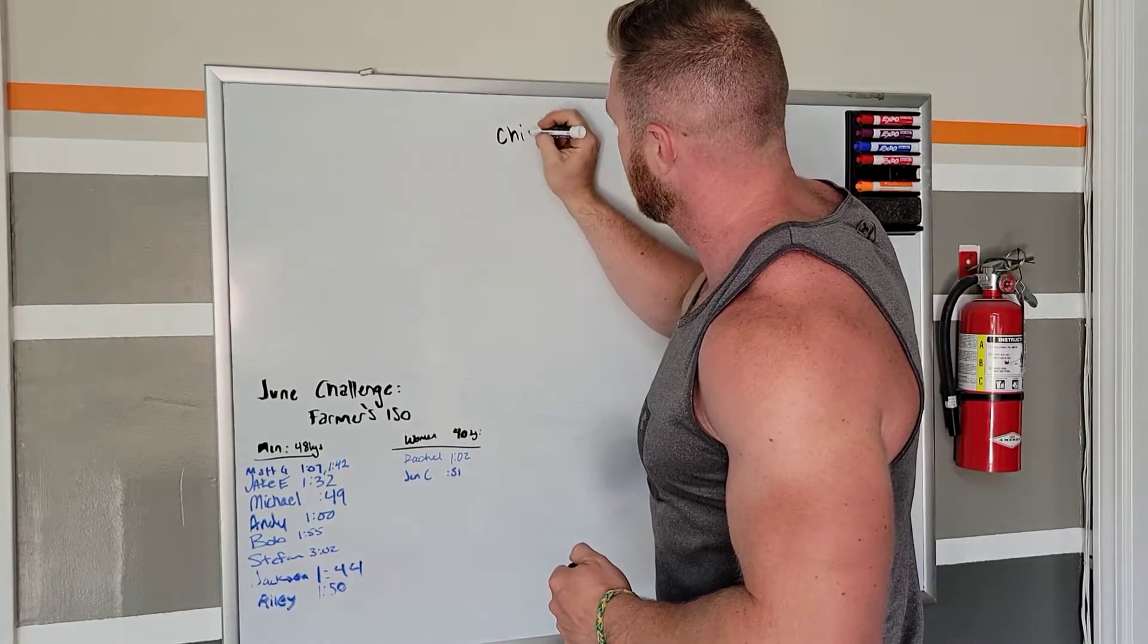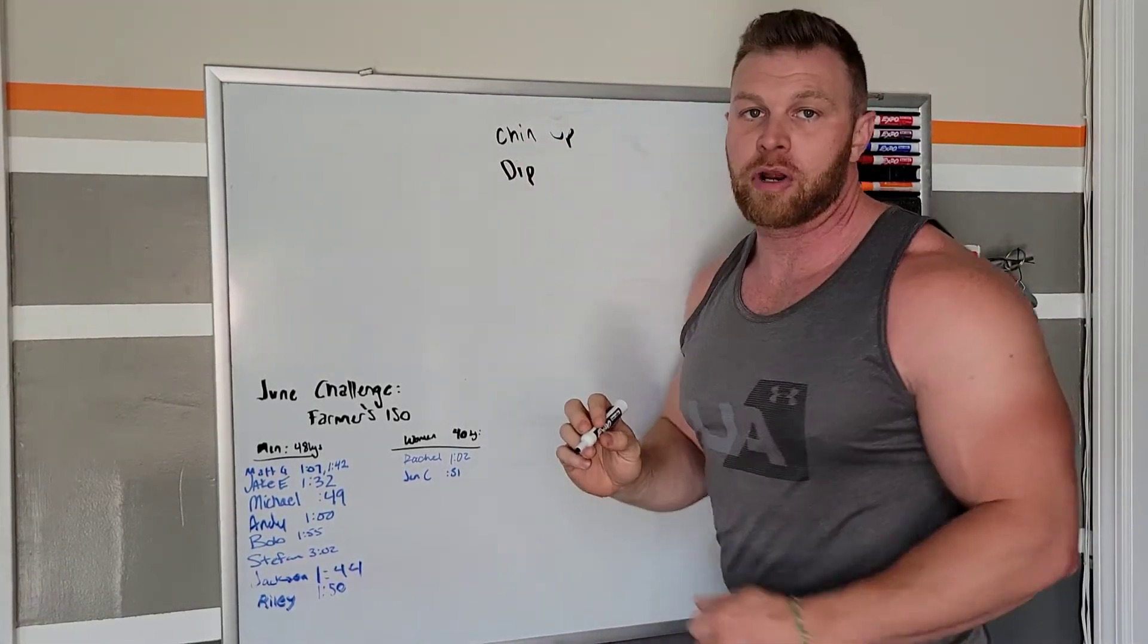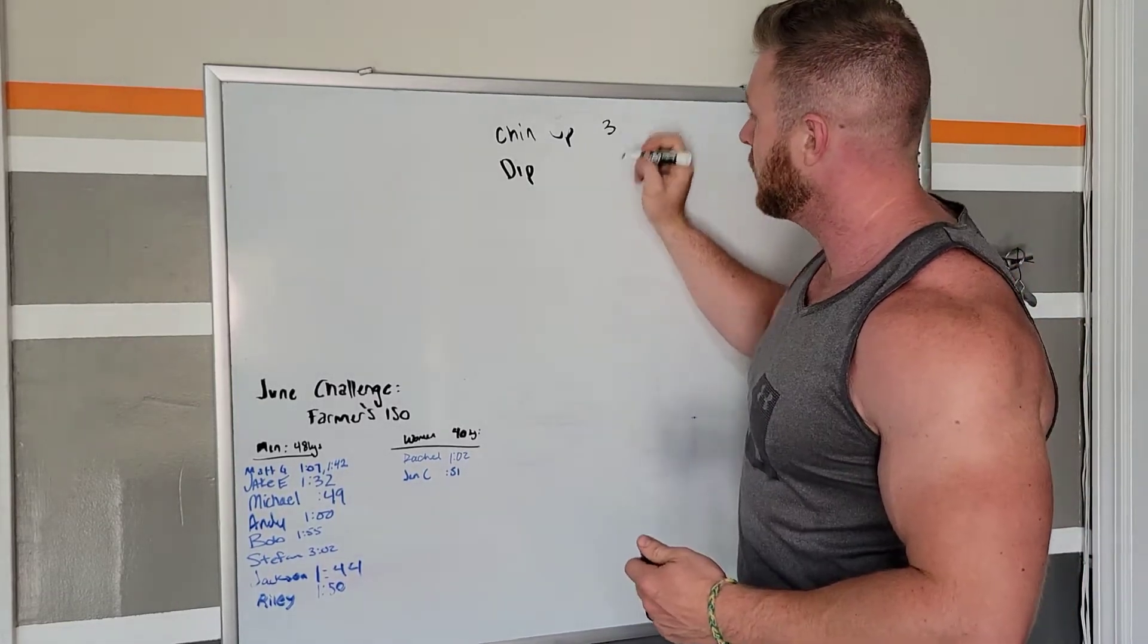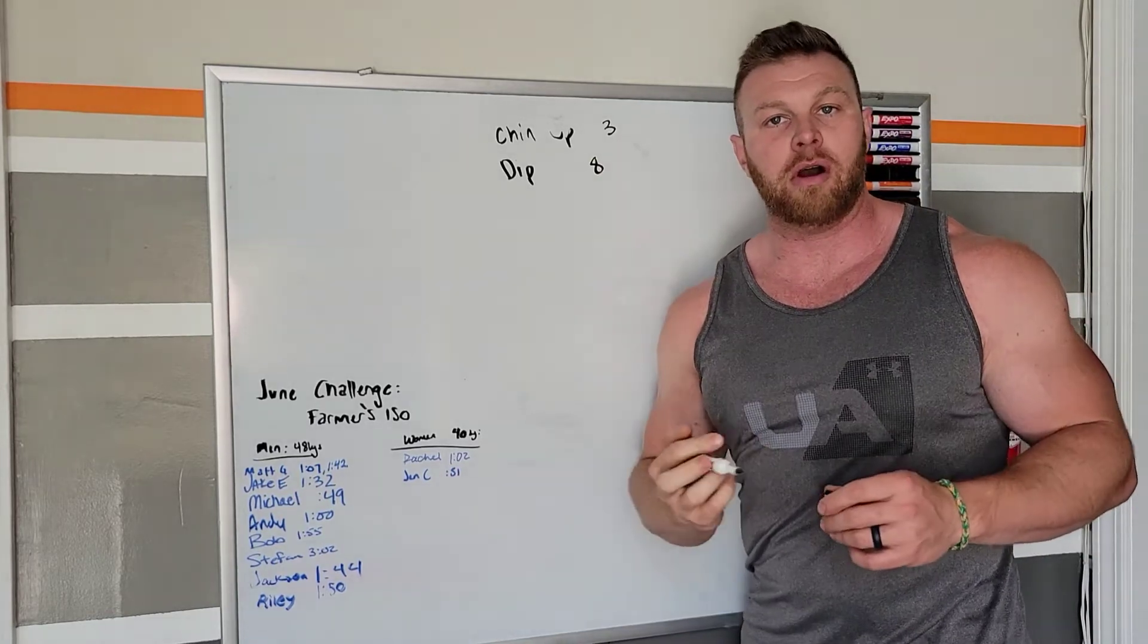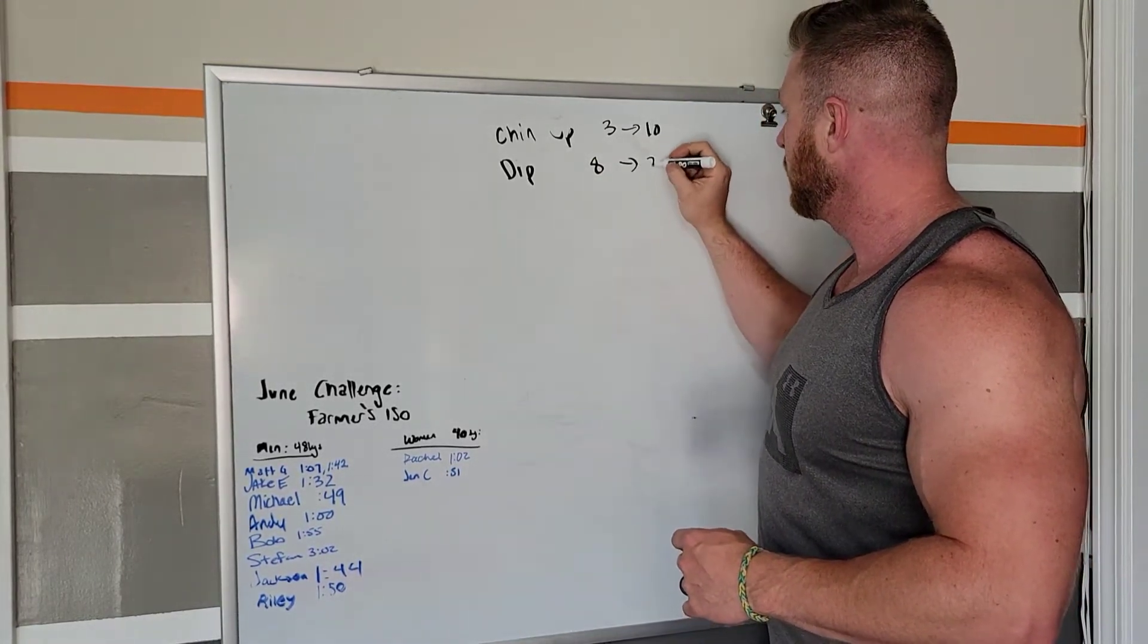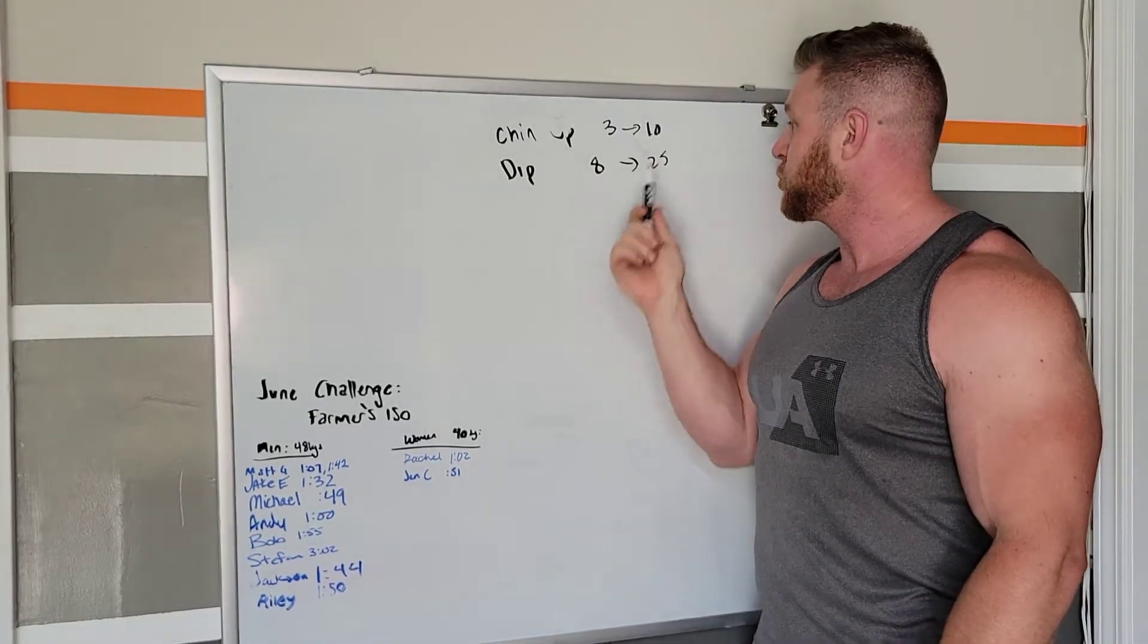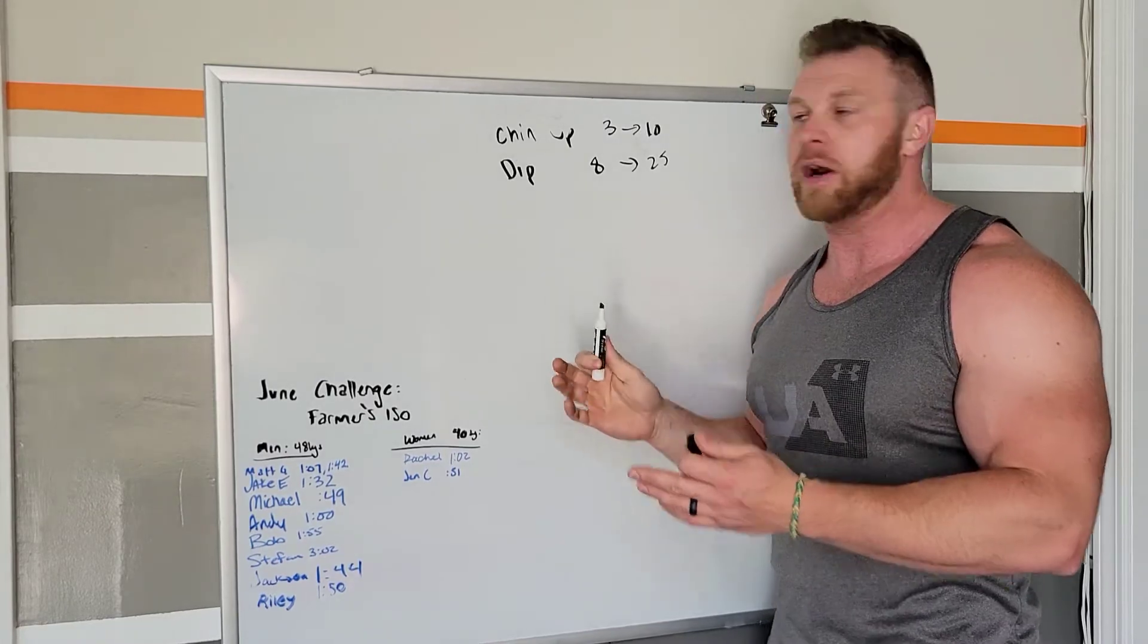We'll say chin-ups and dips. We're going to figure out where exactly you're at. So maybe day one they get three chin-ups and eight dips. If someone wants bigger arms, then I'm going to try to take that number and turn it to 10 and this one to 25. Because somebody that can do 10 chin-ups and 25 dips probably has pretty good arms. That's a great way to do this.